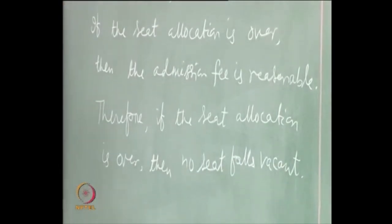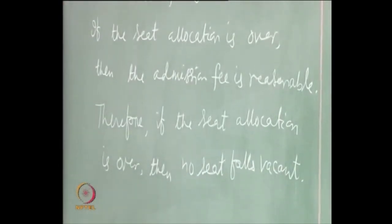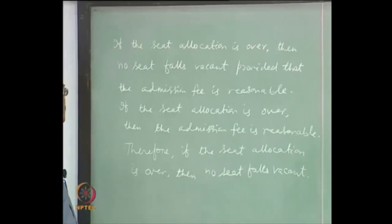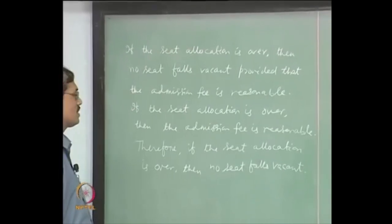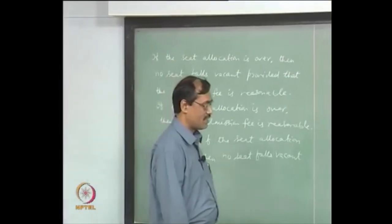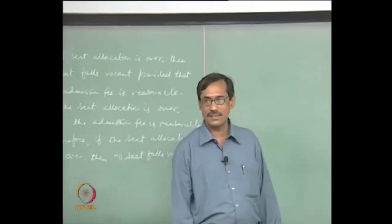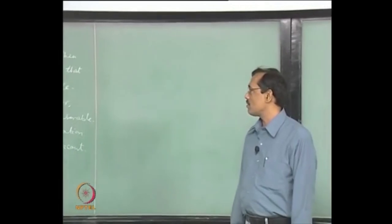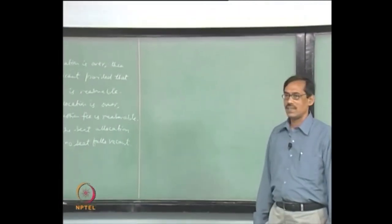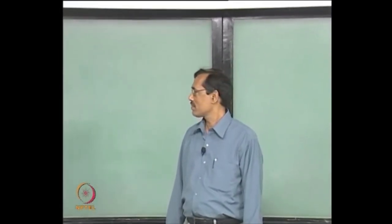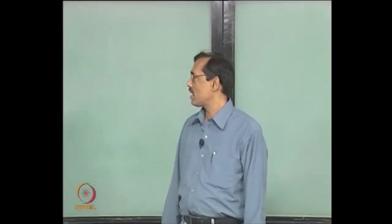This is a typical situation in your sheet allocation in JEE. It says: if the sheet allocation is over, then no sheet falls vacant, provided that the admission fee is reasonable. The second premise says if the sheet allocation is over, then the admission fee is reasonable. And our conclusion is: if the sheet allocation is over, then no sheet falls vacant.